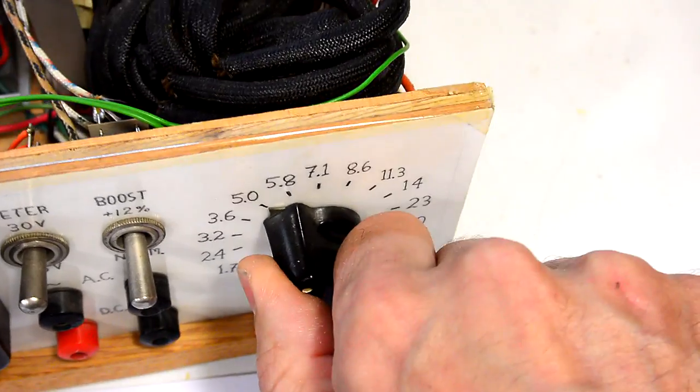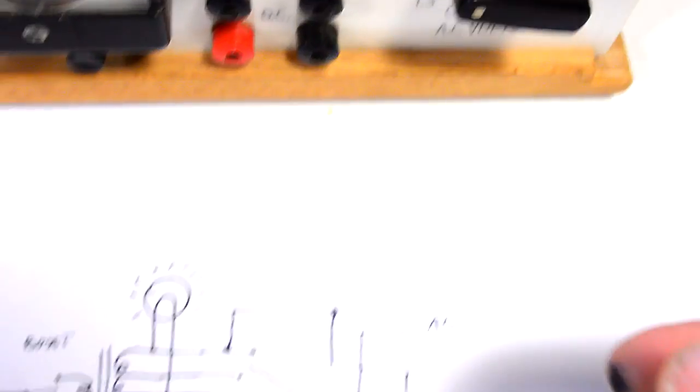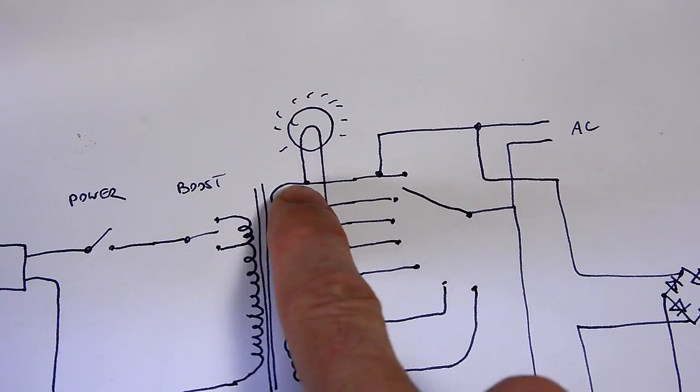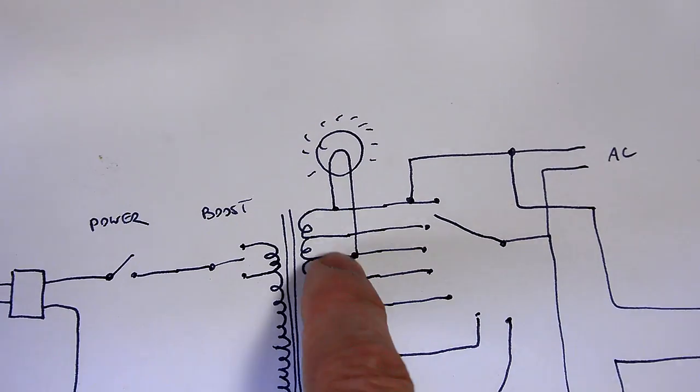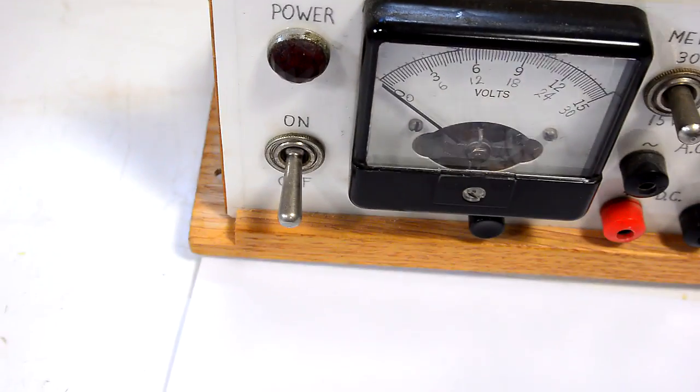Essentially there's a tap for every imaginable filament voltage that a vacuum tube might have. I attached the pilot light, that's this lamp here, to two of the low voltage taps on here so that I could use just a regular 6 volt bulb for that.